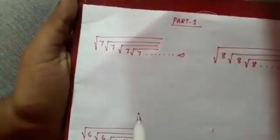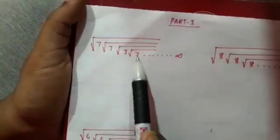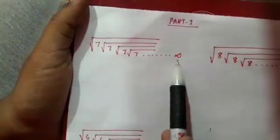Let's find one approach. First, root 7 into root 7, to root 7, to root 7 until infinity. Let's work through this.